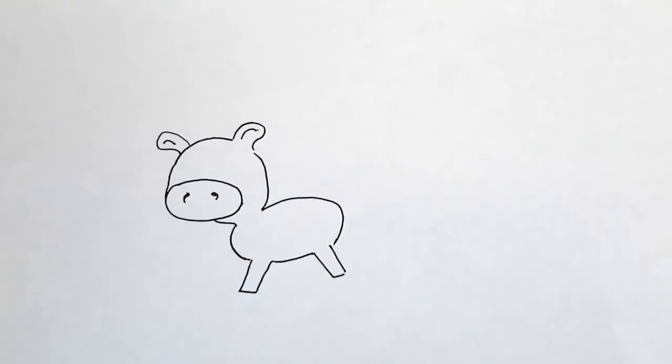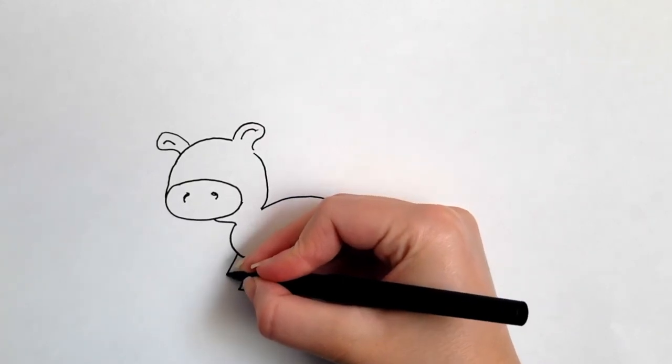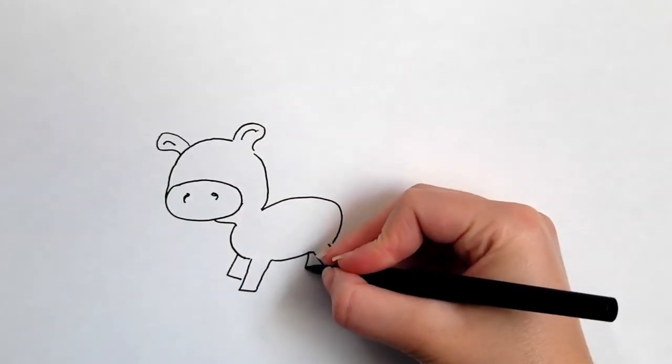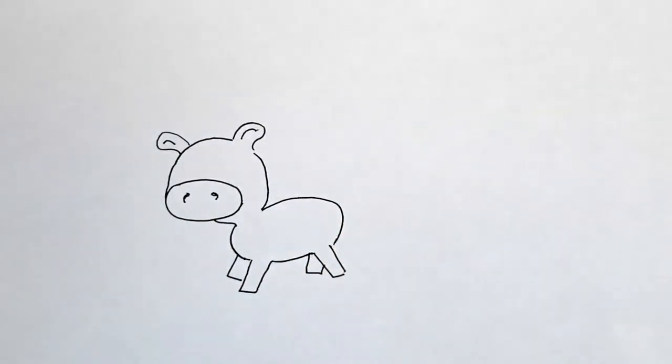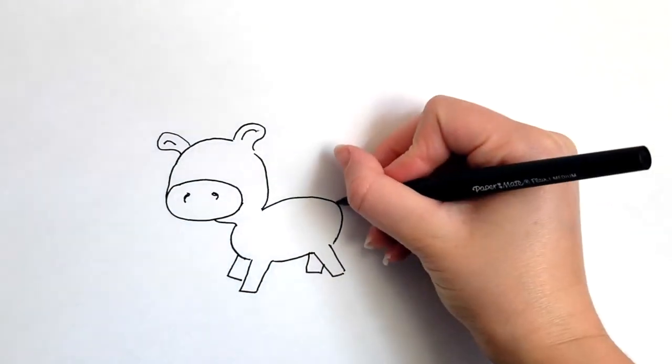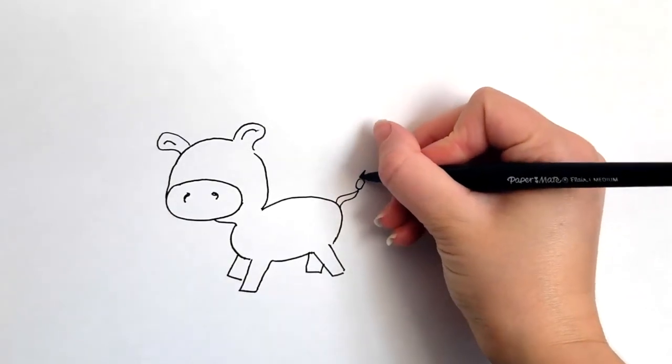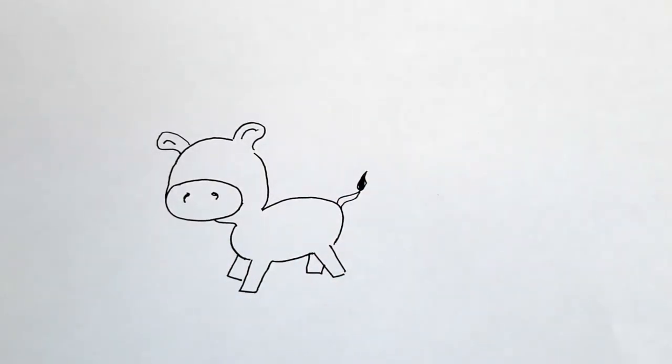Now we have two legs, but zebras of course have four. I'm gonna put a leg here, put another leg here. Now I'm gonna add the tail just like that, a little teardrop at the end, and color it in.